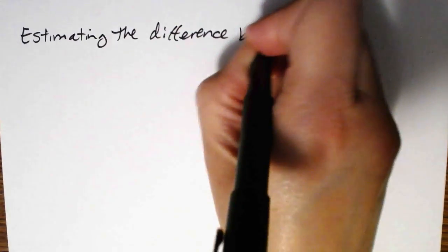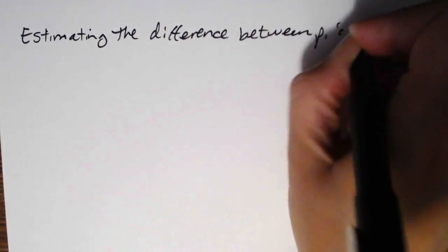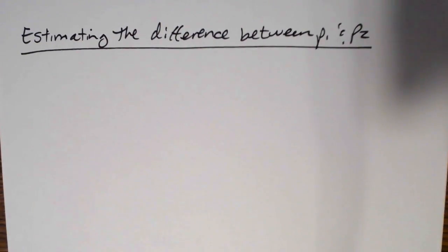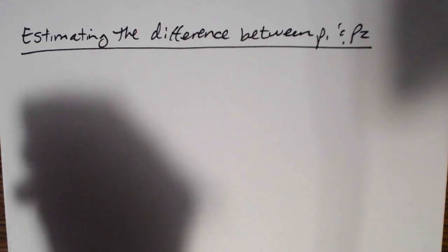In this video we're going to be taking a look at estimating the difference between population proportions — the difference between p1 and p2. Very similar to what we did with estimating the difference between means, but here we're going to be estimating the difference between two population proportions instead. Now in terms of our conditions for inference...